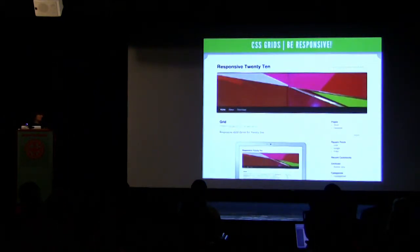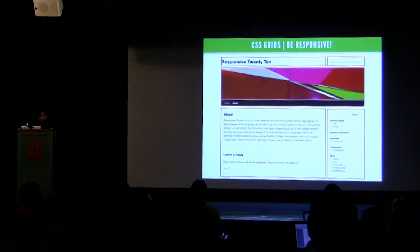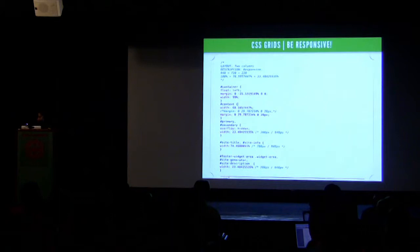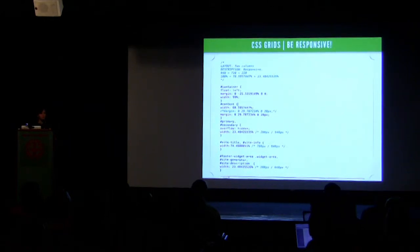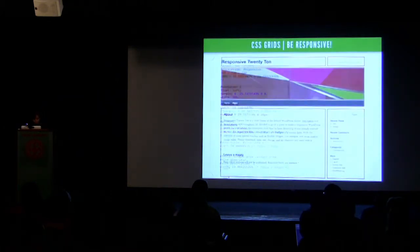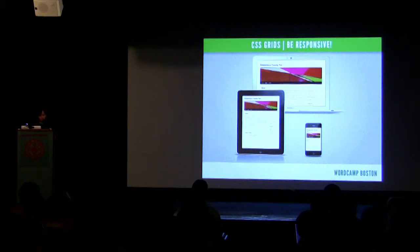Here's an example: Responsive2010.com takes the Twenty Ten grid and changes all the pixel widths to those long percentages — including the margins — and it becomes responsive. Whatever size the browser window is, it'll flex. What's really important is to put constraints on it. You don't want it to stretch on forever — you want a max-width at a certain point so it'll adapt properly across different devices.